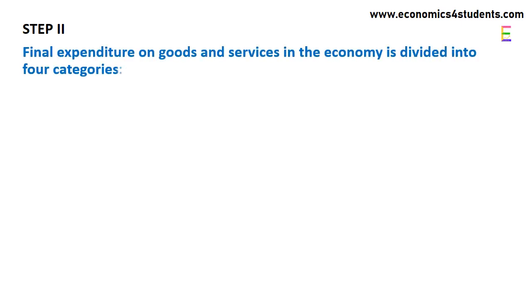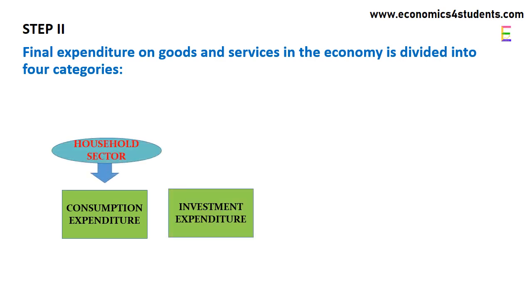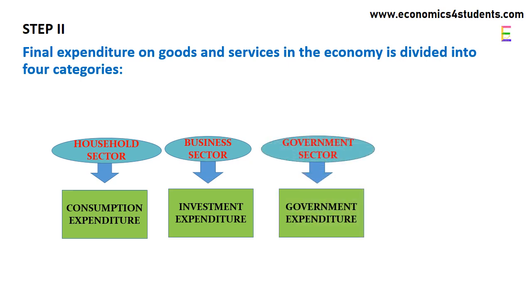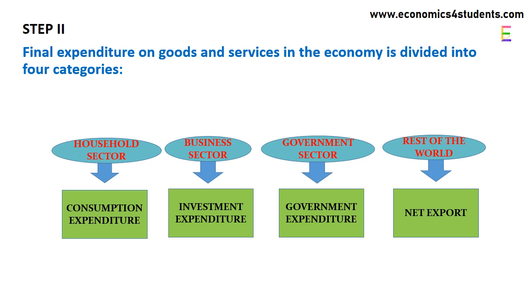Step 2: We will see how these four economic units are spending on different goods and services. This expenditure on goods and services in the economy is divided into four categories: consumption expenditure by the household sector, investment expenditure by business sector, government expenditure by the government sector, and net export by the rest of the world. We will explain all these four types of expenditure with all their components in detail.